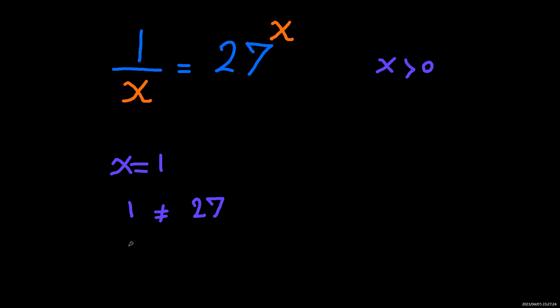What if we go with something larger than 1, like for example 2? If X is 2, we're going to have 1 over 2, and this will be 27 to the second power, so it will be way larger. So now we can say that X will be larger than 0, but also X would be smaller than 1.